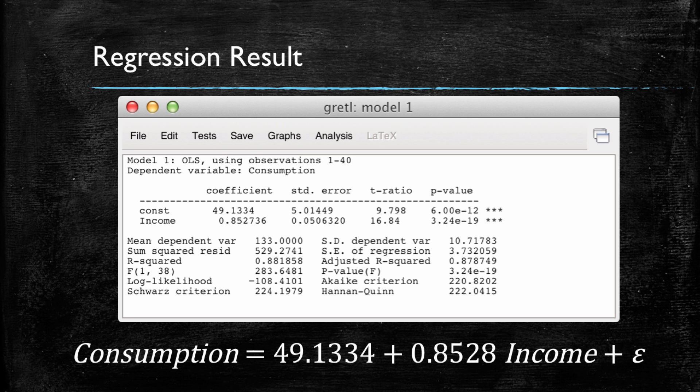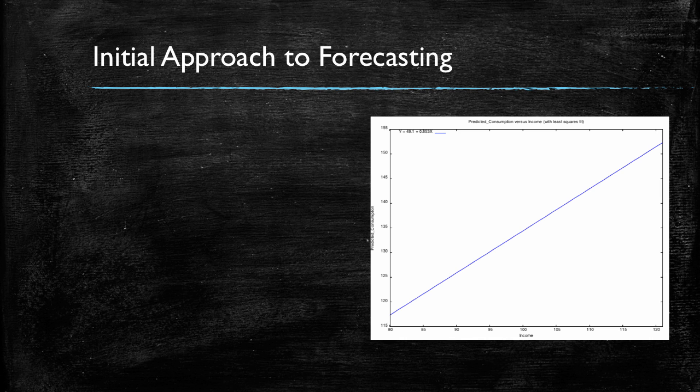Now, what could we do with this output? Well, an initial approach to forecast this family's value is basically, let's plug in the $100 of income in our model to see what consumption we would get. We had estimated a linear regression model that has a certain intercept and a slope that is multiplied by x. In our particular case, we had estimated a slope of 0.85 and an intercept of 49. And we have on the right-hand side a plot with a horizontal axis for income and a vertical axis for consumption.